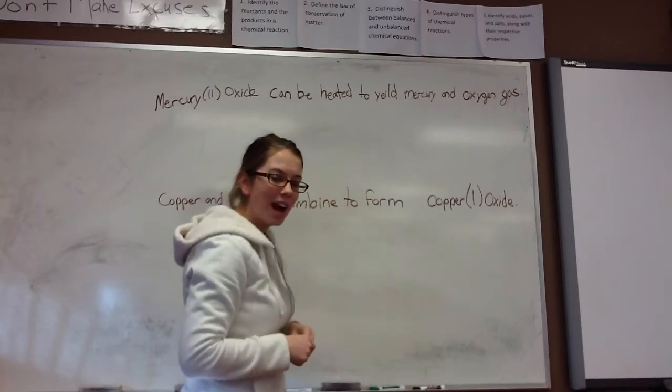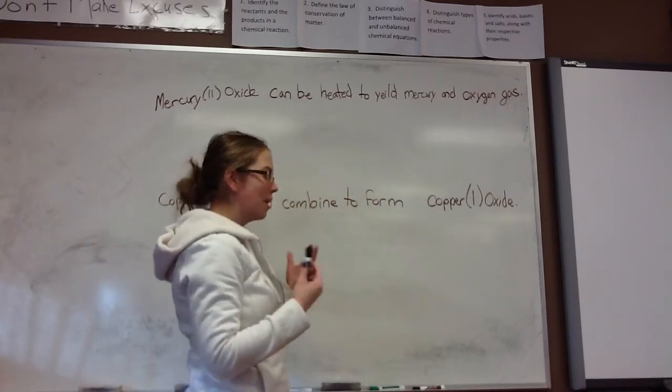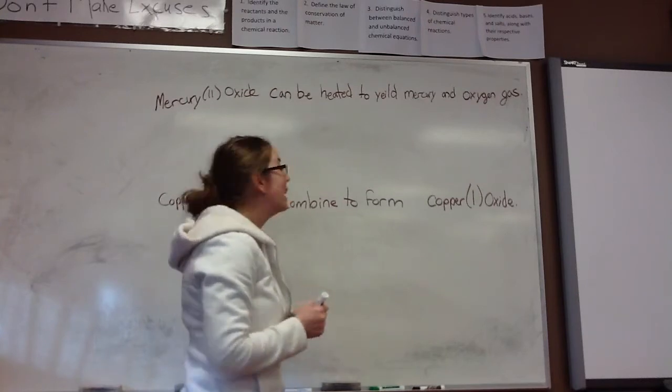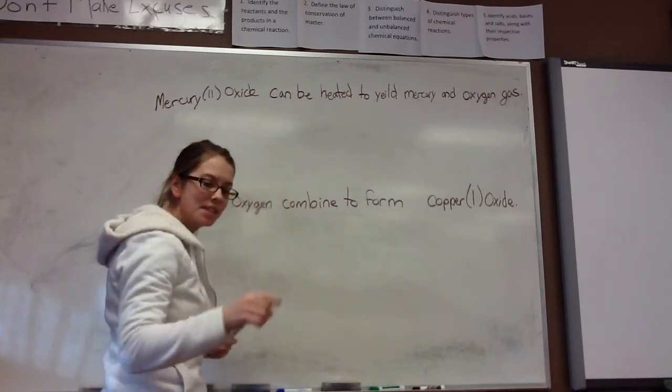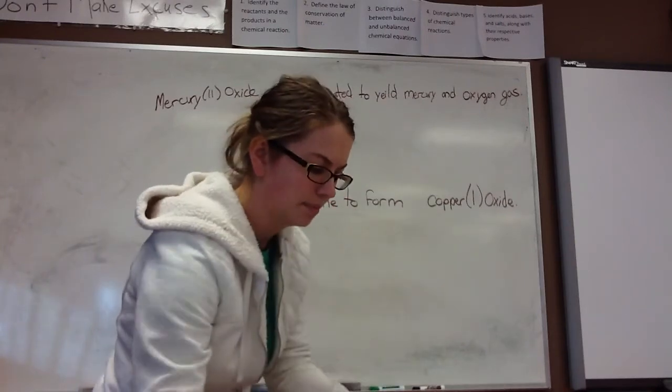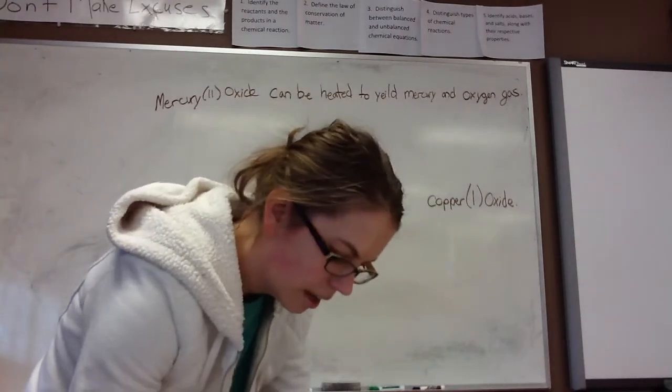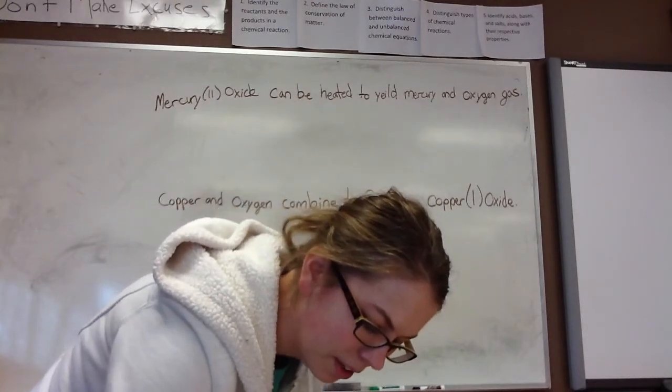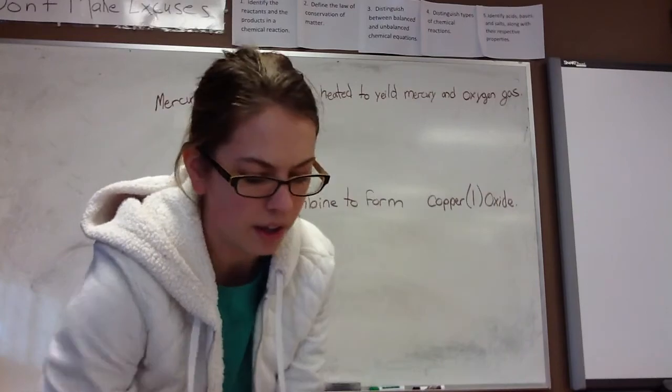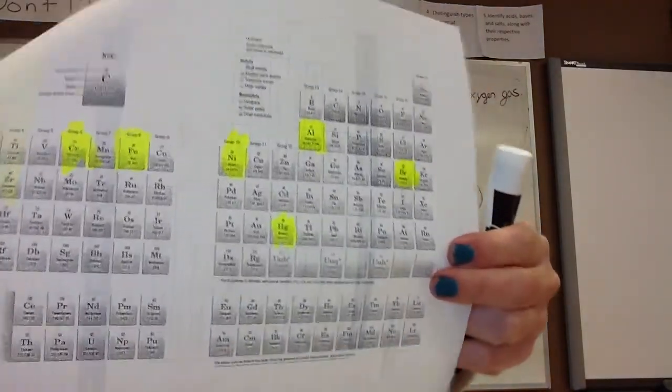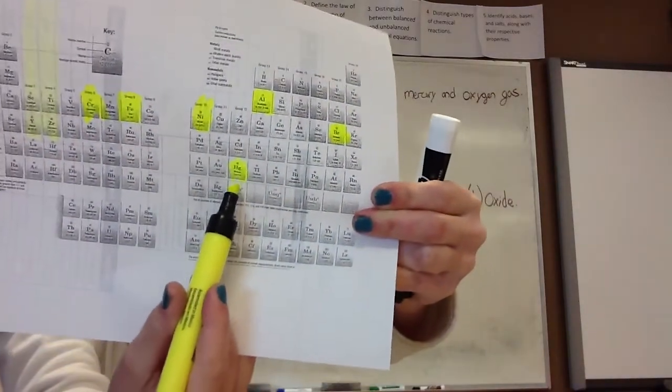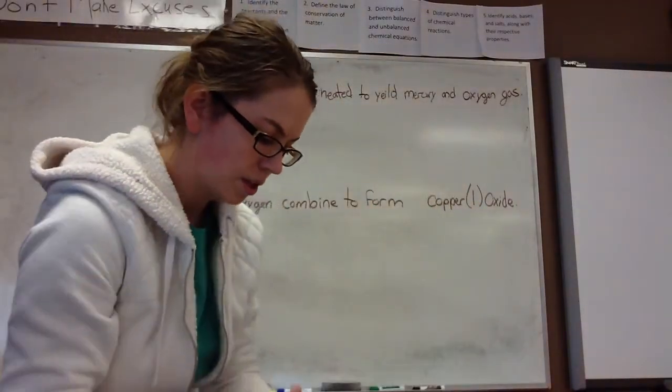Because we start with mercury oxide and then we cause it to go through a change, mercury oxide is our reactant. The symbol for mercury on your periodic table is Hg, and I'll highlight it for you. Right there, mercury, Hg. So I'll write that first.